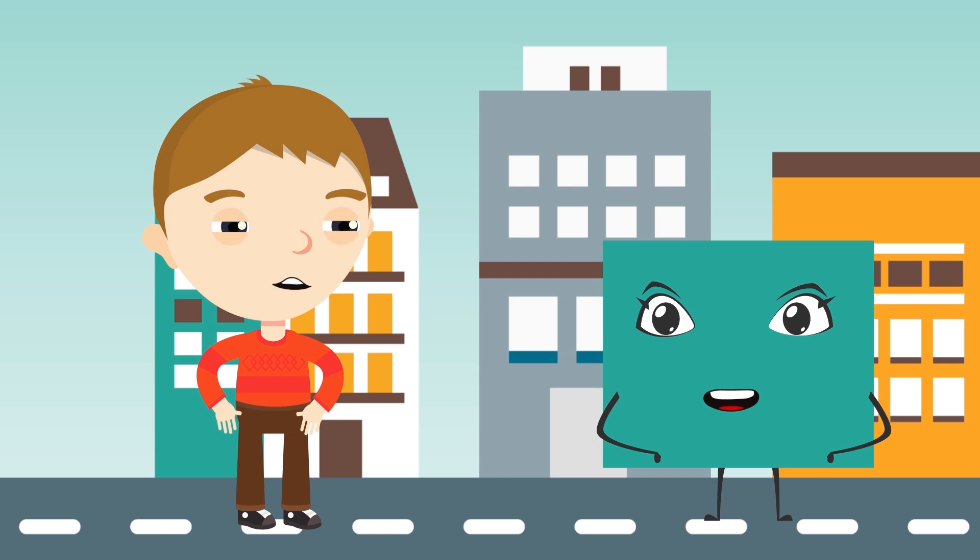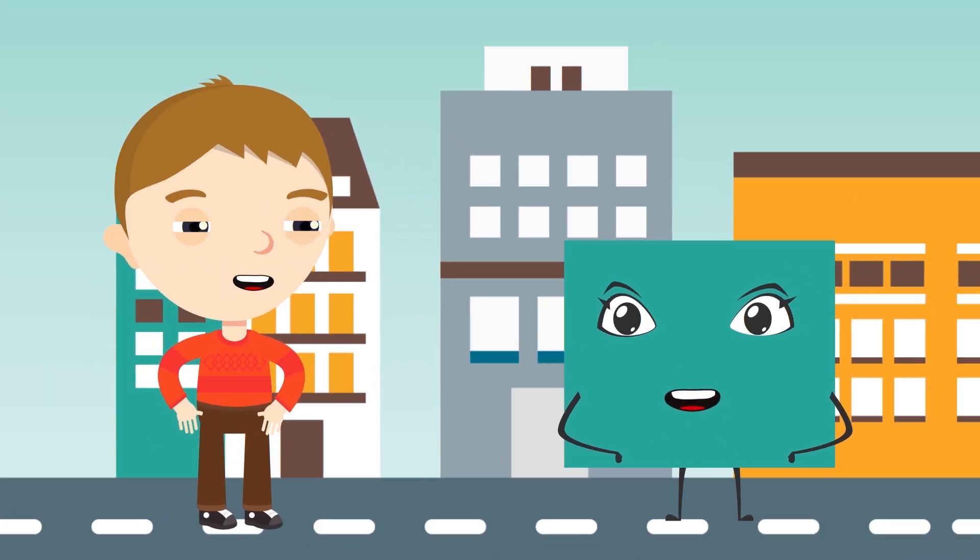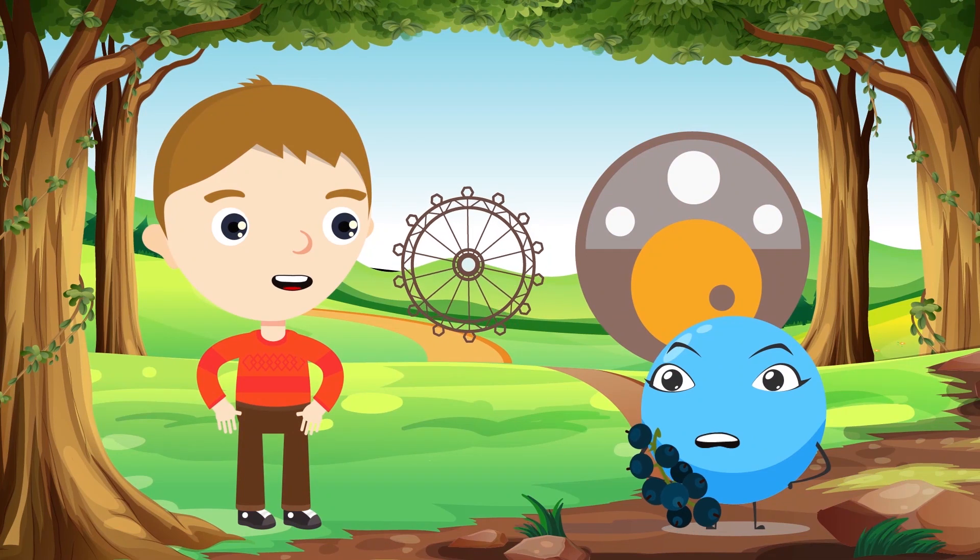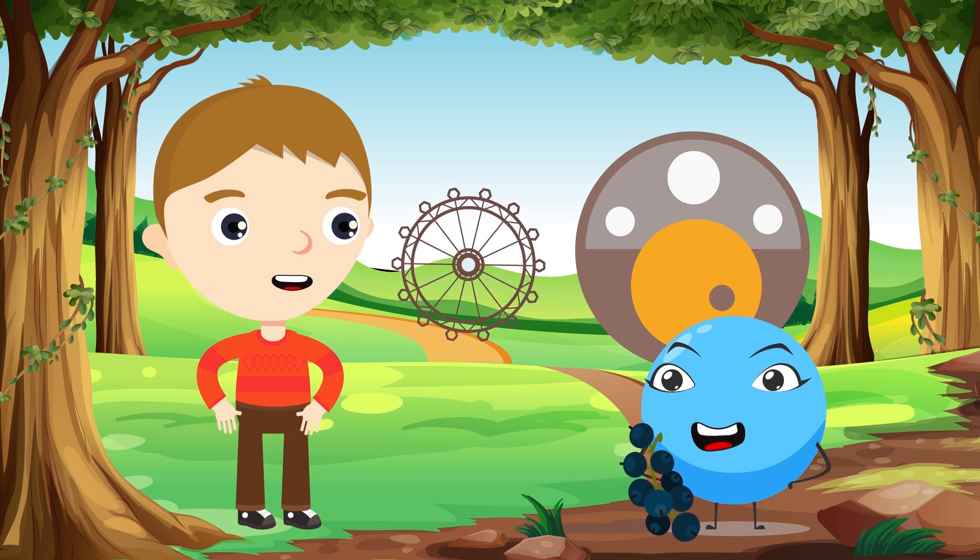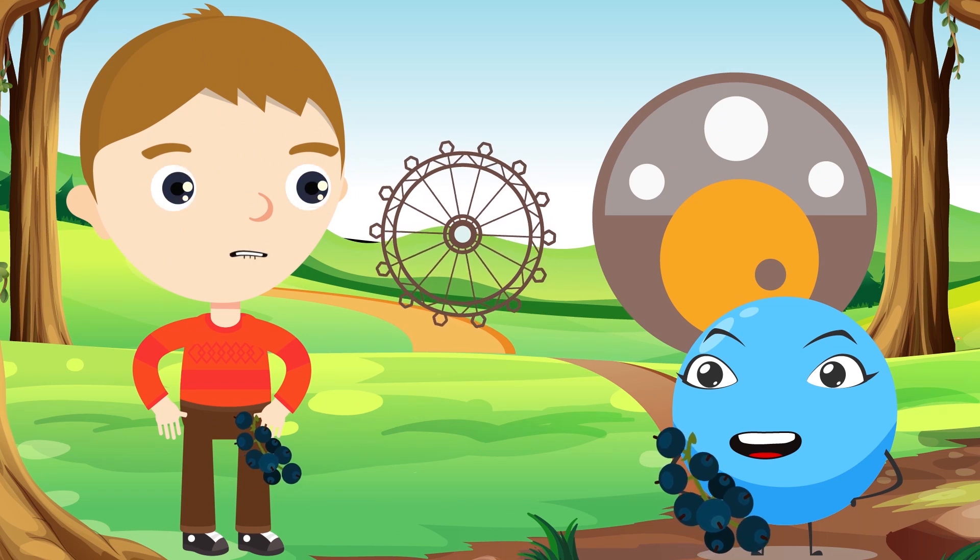She lives next door. Ah, that's Sissy Circle. Actually, she is in her garden. Pop over. She would like to see you. Hello, Sissy Circle. How are you today? Oh, hello, Aaron. Would you like a taste of one of my delicious and perfectly round blueberries? Yes, please. Yummy.